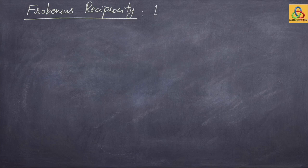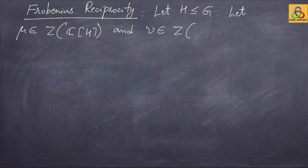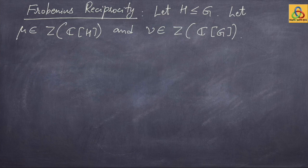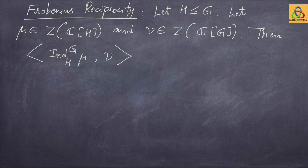Now, what is Frobenius reciprocity? Let H be a subgroup of a group G. Let mu belong to the center of C[H] — a class function on H — and nu belong to the center of C[G] — a class function on G. Then the following formula holds: the inner product of the induction of mu from H to G with nu equals the inner product of mu with the restriction of nu from G to H.